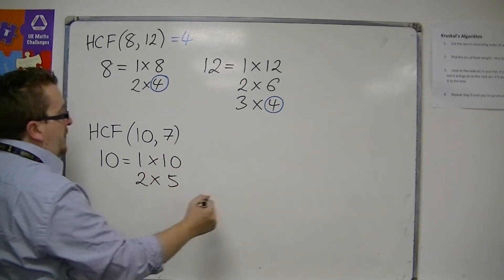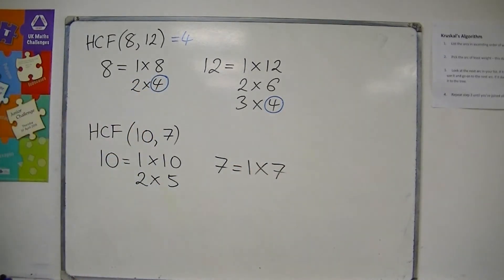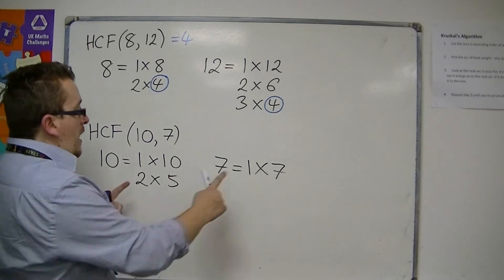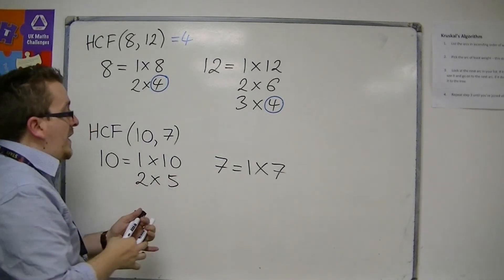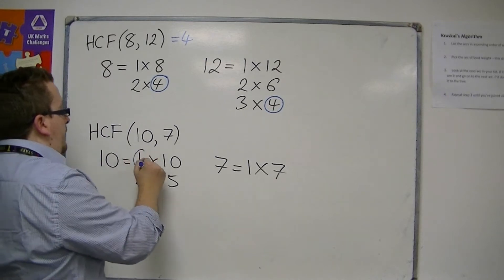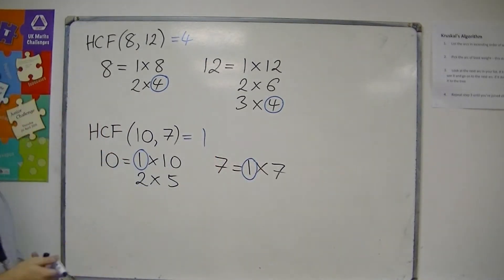To get 7, 7 is prime, so the only way to get 7 is 1 times 7. The only number that is common to both is 1. So that is the largest that there is for these two numbers. The highest common factor is 1.